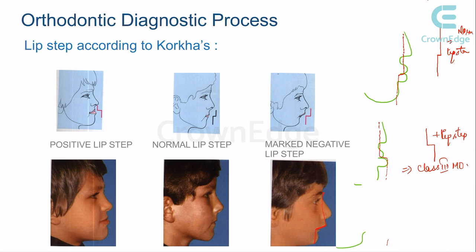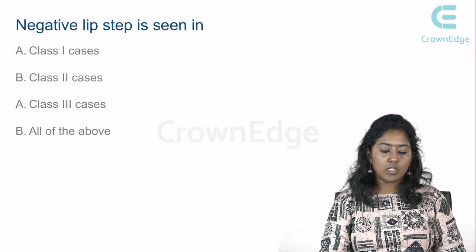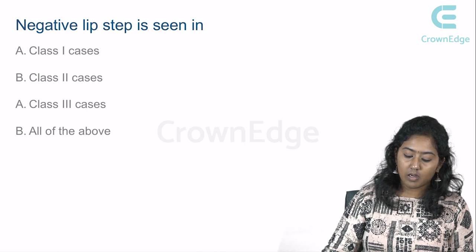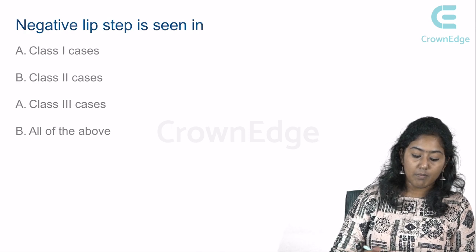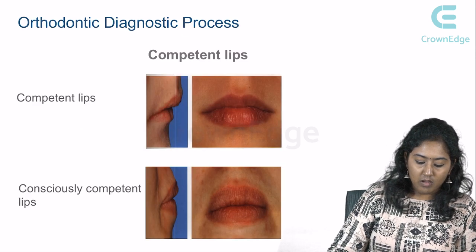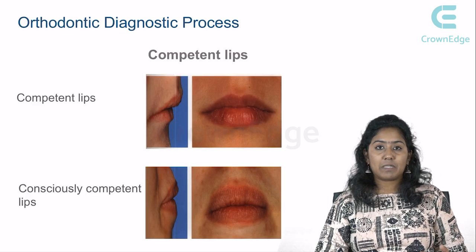A negative lip step is seen in Class 2 malocclusions. Remember: positive lip step = Class 3 malocclusion; negative lip step = Class 2 malocclusion. Exam question: negative lip step is seen in which case — Class 1, Class 2, or Class 3? Answer: Class 2 cases.